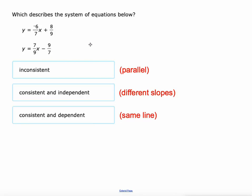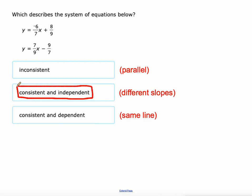On this first one, I can see that they do have different slopes — one's got a slope of negative six-sevenths, one's got a slope of seven-ninths. So I know that these two lines are going to intersect one time, making them consistent and independent.